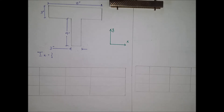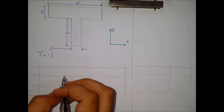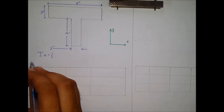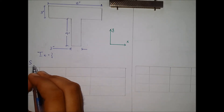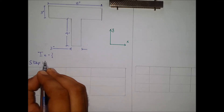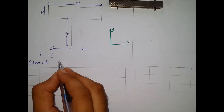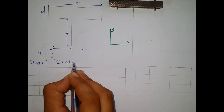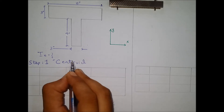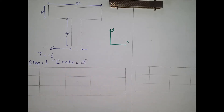For the composite shape, we know that we use the parallel axis theorem, which we already discussed in the previous video. The first step for a composite shape moment of inertia is to calculate the centroid of the whole shape — that is the geometric centroid.